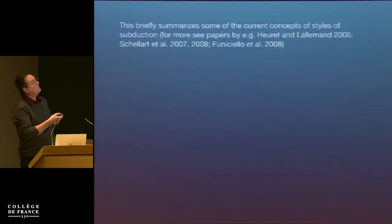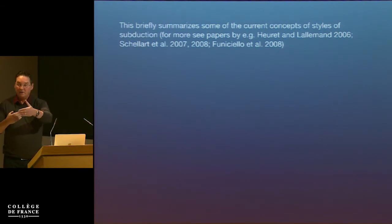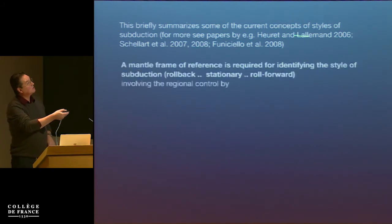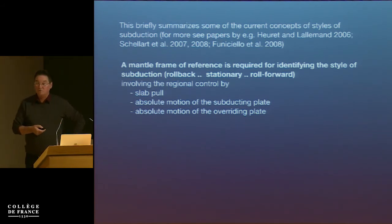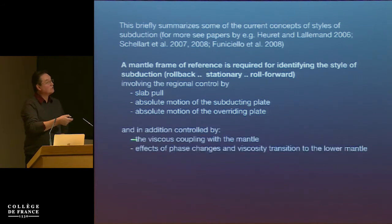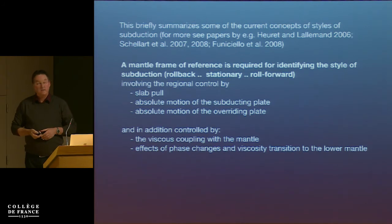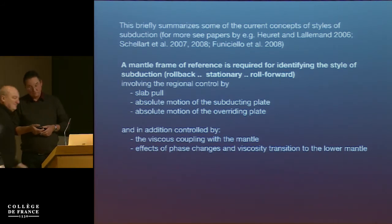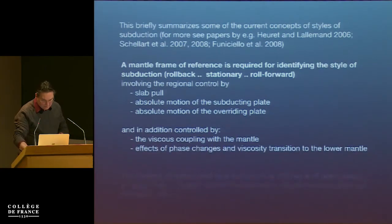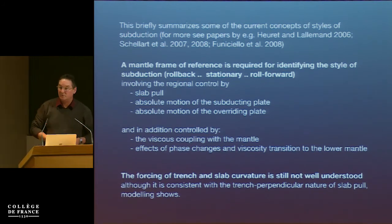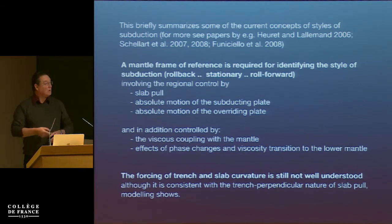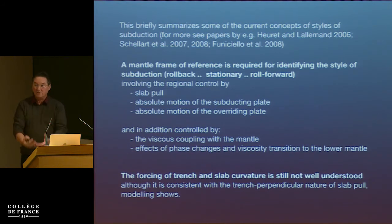Let's briefly summarize the trench-perpendicular view on subduction. The mantle frame of reference is essential. Slab roll is the key driver, but absolute plate motion of both the subducting and overriding plates is also very important. In addition, we have viscous coupling with the mantle, and of course the effects of phase changes and viscosity transitions. One thing not yet fully understood is the forcing of strength and slab curvature in rollback situations — we have many curved subduction zones, and modeling shows this is at least consistent with the trench-perpendicular nature of slab pull.